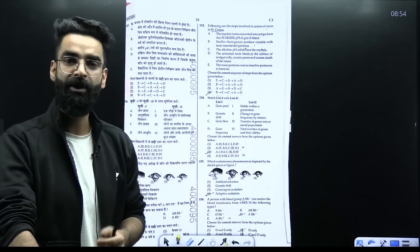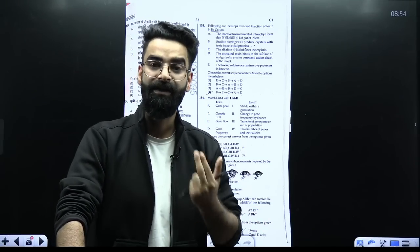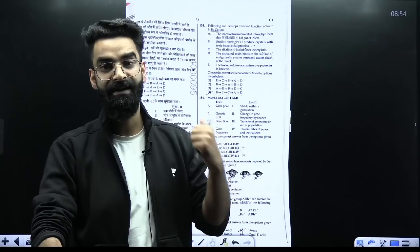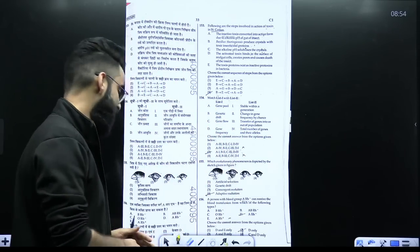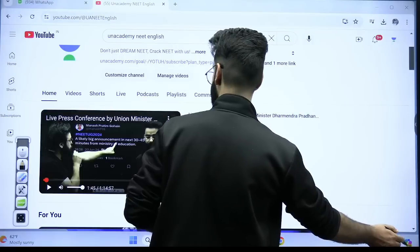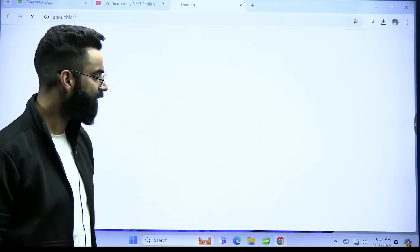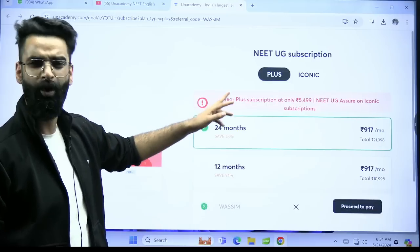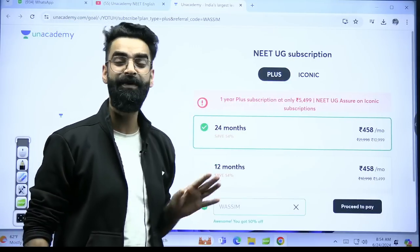As you would have seen, for the Phoenix 2.0, I keep on conducting the mentorship sessions every week. Similarly, that's going to happen with the Phoenix 3.0 students as well. So let me quickly show you how do we get enrolled into the batch. See, the video which you are watching right now, there is a link in the description box of the video, click on the link. Once you click on the link, you have got two options, either to go for plus subscription or the iconic subscription. What is the difference between the two?